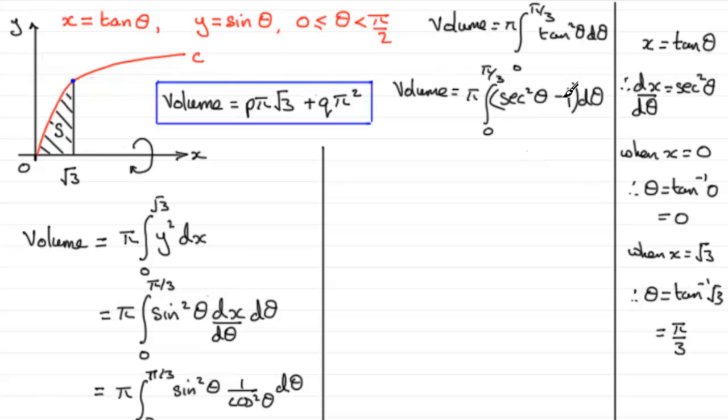Now each of these we can integrate. So we know that the integral of sec squared theta is tan theta. So we've got tan theta there, and the integral of one with respect to theta, well that's going to be theta. So we have our limits going from naught to pi upon three.